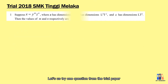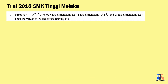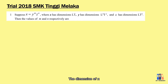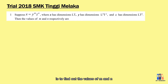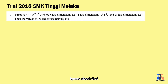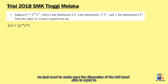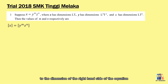Let us try one equation from the trial paper of SMK Tinggi Melaka in 2018. We are given the equation x equals y to the power of m multiplied by z to the power of n, and the dimensions of x, y, and z are given. We need to find the values of m and n. We do not need to know what actual variables x, y, and z represent. We need to ensure the dimension of the left-hand side equals the dimension of the right-hand side.